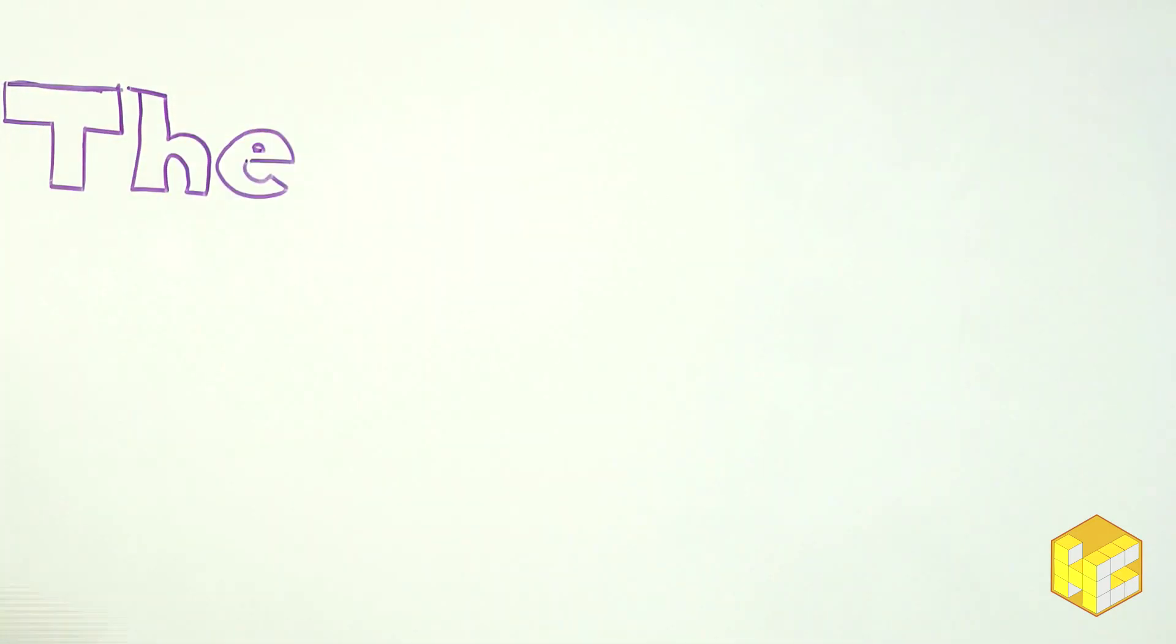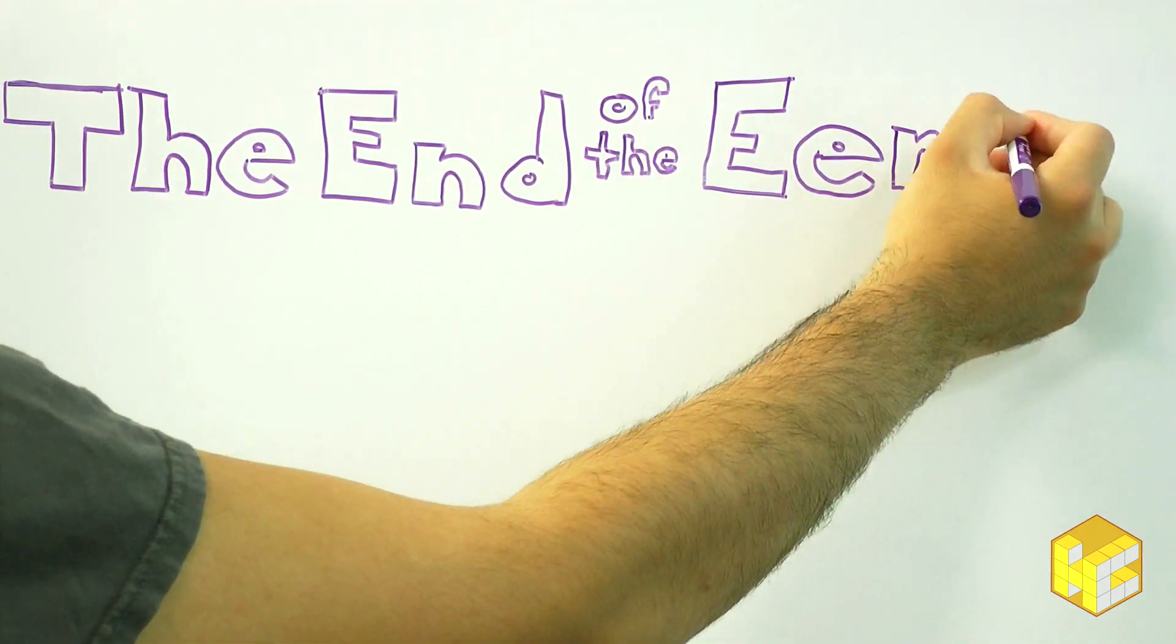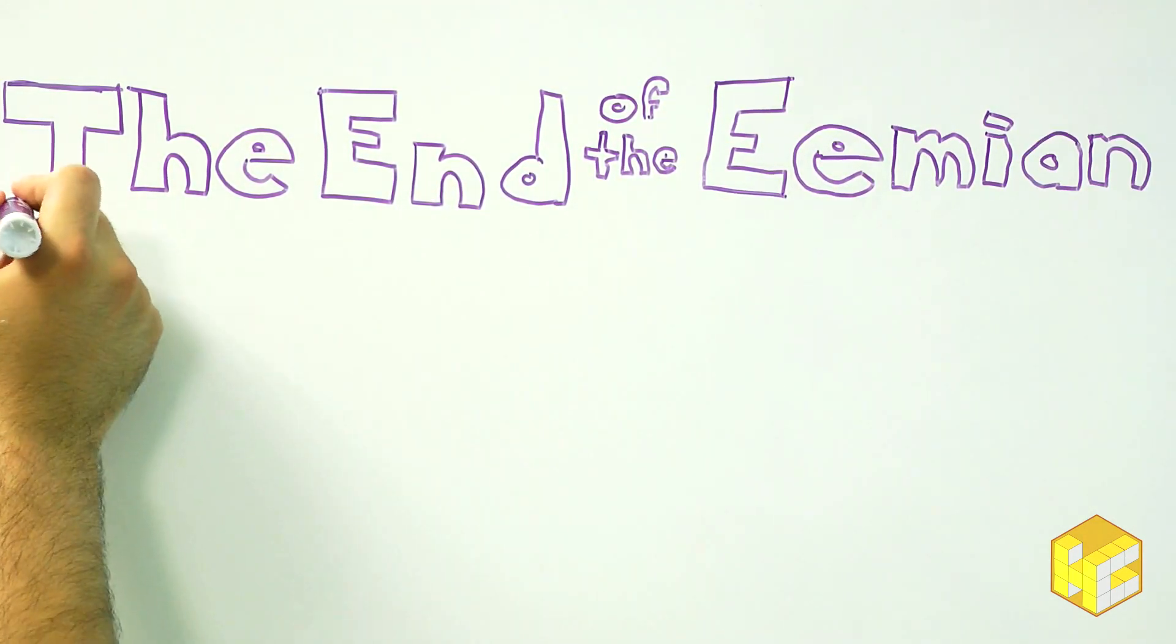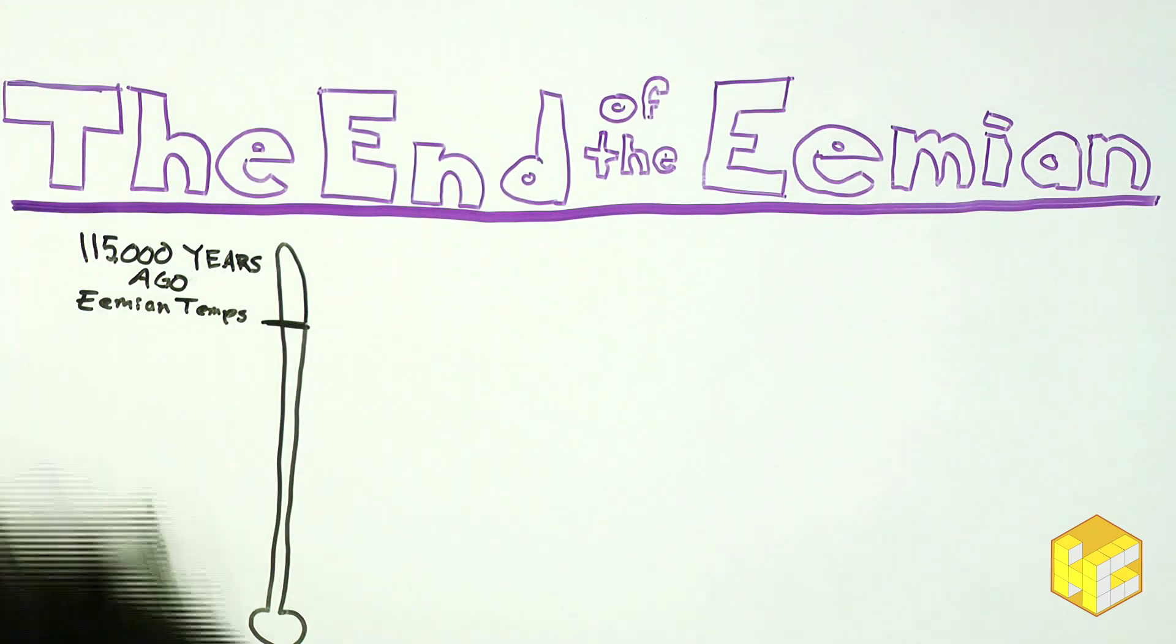The Eemian was an interglacial period that ended about 115,000 years ago. The end of the Eemian shared a lot of characteristics with modern times. In fact, the average global temperatures were only a little higher than they are today.